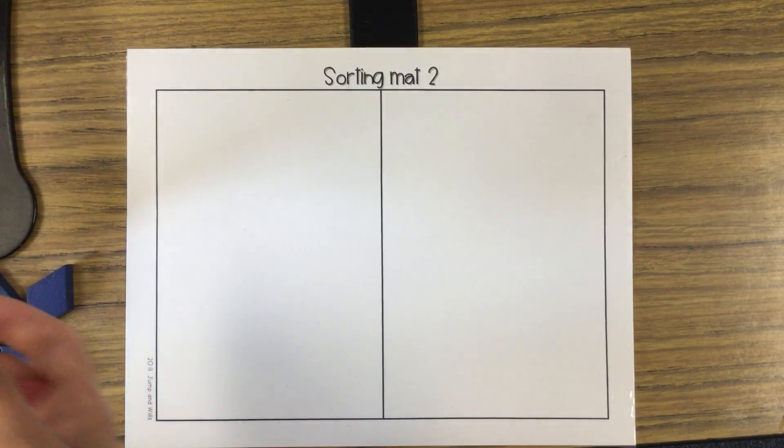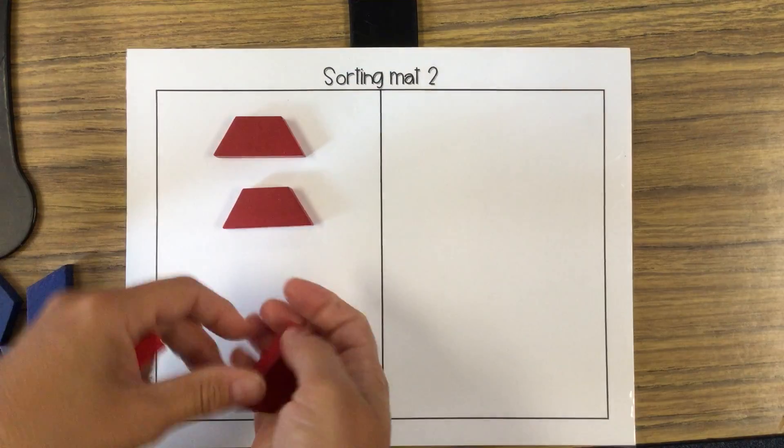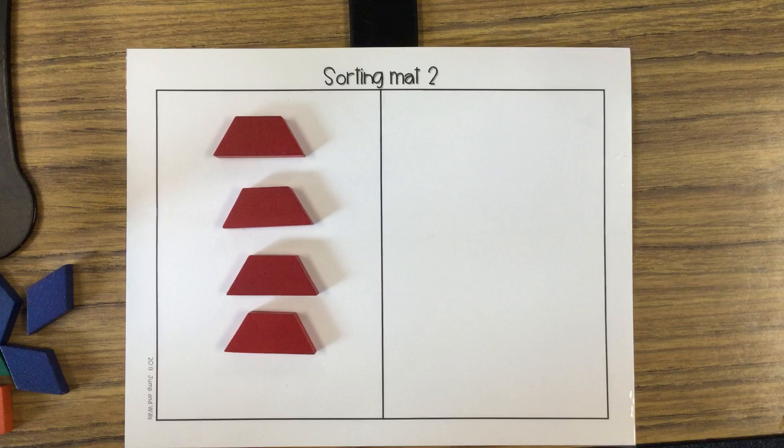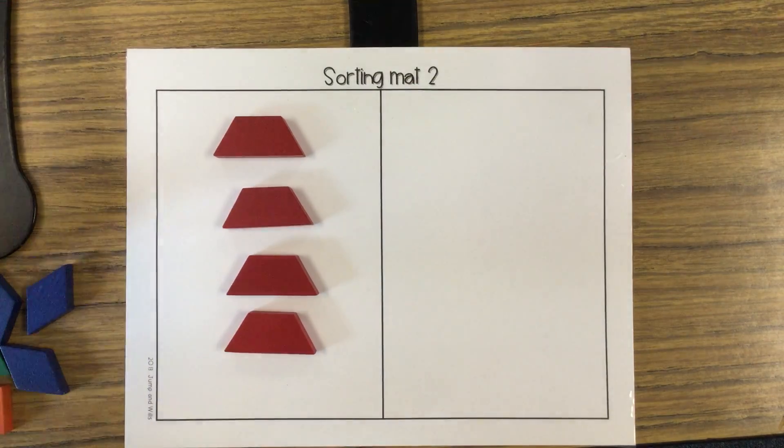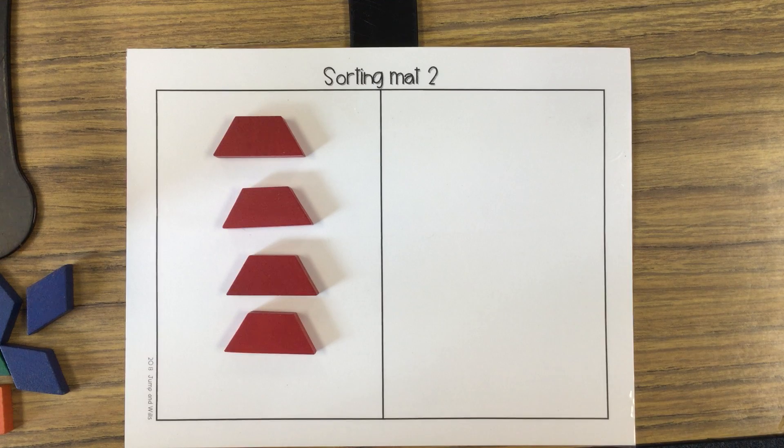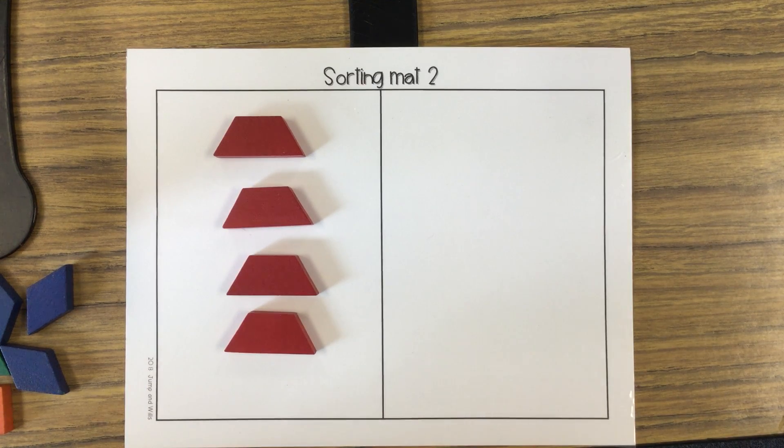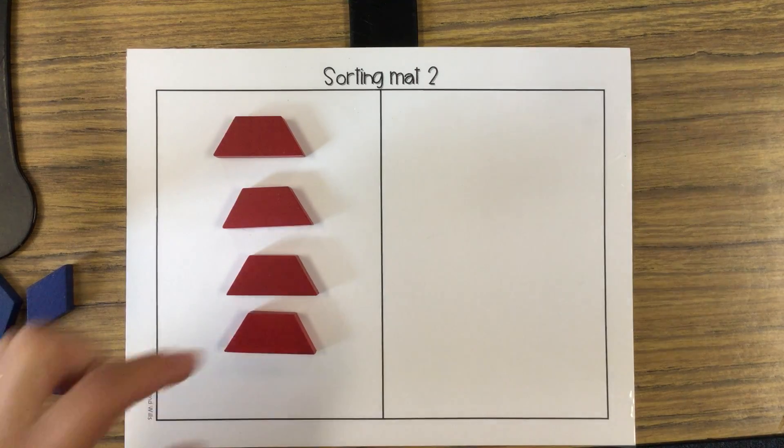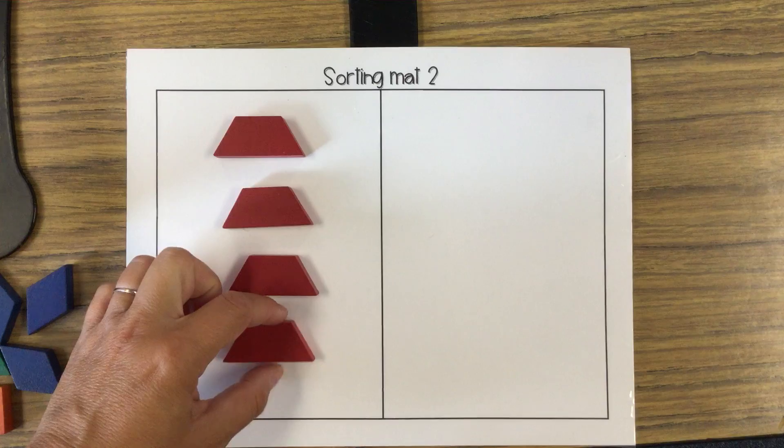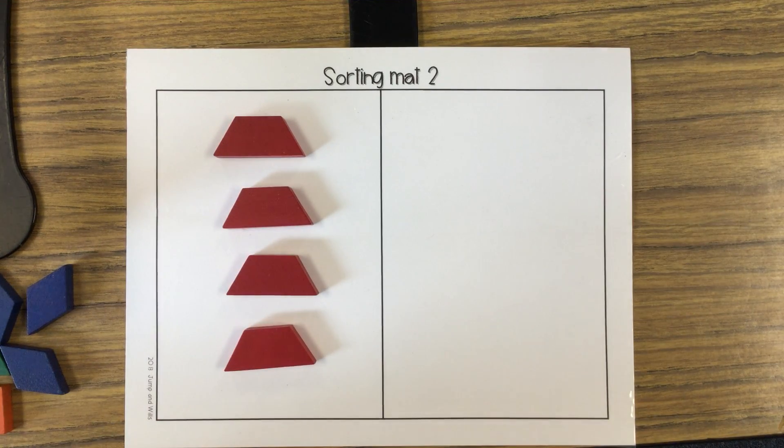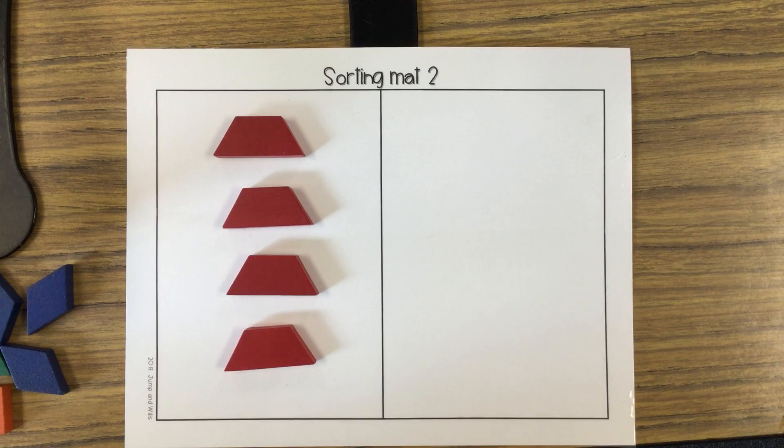And then we have these. Oh, do you know what those are called? Those are trapezoids. Yeah, they're funny, aren't they? They look like squished rectangles. They have four sides like rectangles, but they're not exactly the same because they have to have opposite sides equal, but then they also have to have parallel lines. And these lines aren't parallel. We don't really get into that geometry, but you can just tell just by looking.